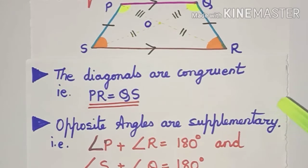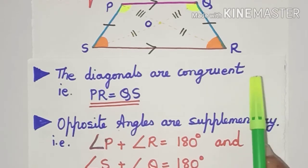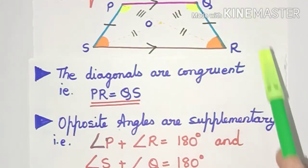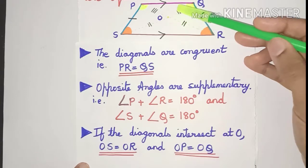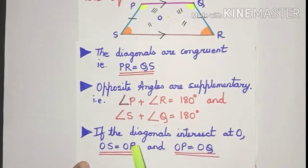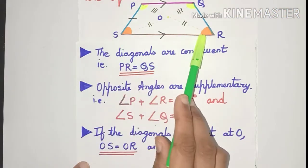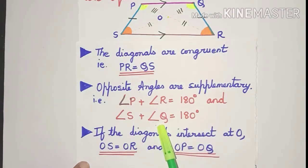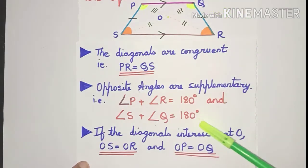The next property of an isosceles trapezium is that the diagonals are congruent, that is PR is equal to SQ. If the diagonals intersect at point O, then OQ is equal to OP and OS is equal to OR. Another property is that the opposite angles are supplementary — angle P plus angle R is 180 degrees, and angle S plus angle Q is also 180 degrees.